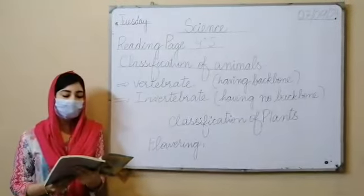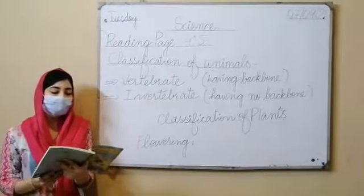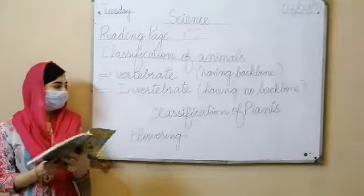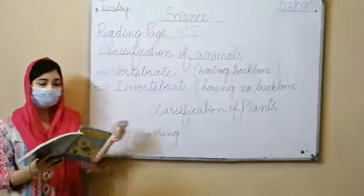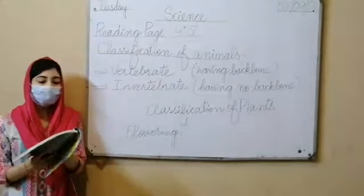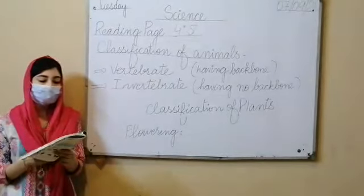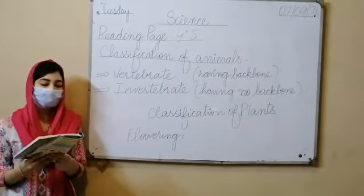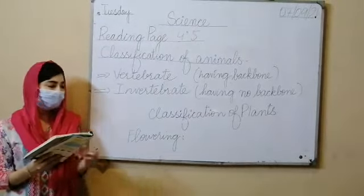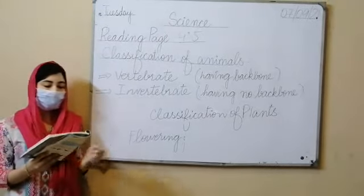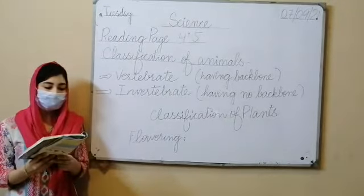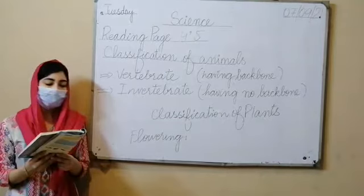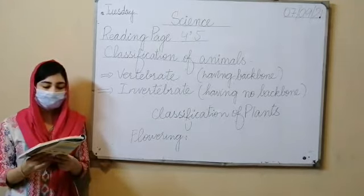Now turn to page number 5. Classification of plants. Plants are divided into two major groups: the first group is flowering plants, and the second group is non-flowering plants.